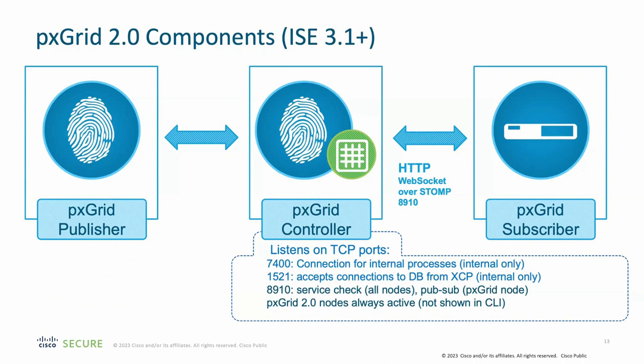The PXGrid framework is generally split into three categories. The PXGrid controller is your PXGrid node in the deployment. The PXGrid publisher is the node that sends data into the PXGrid controller. And the PXGrid subscriber is what receives that data. ISE nodes can play either of those roles — they can be publishers or subscribers.